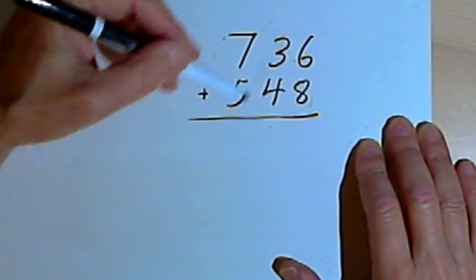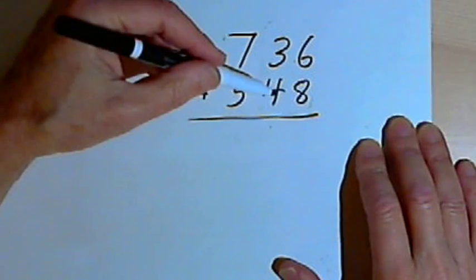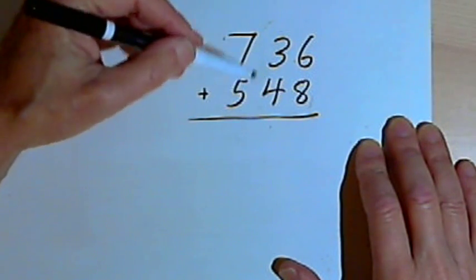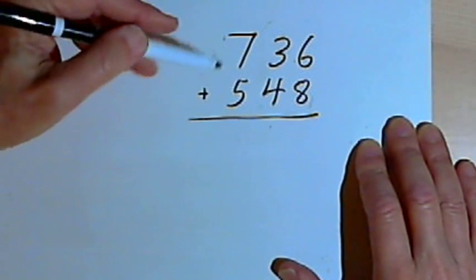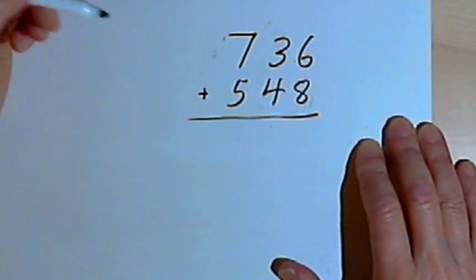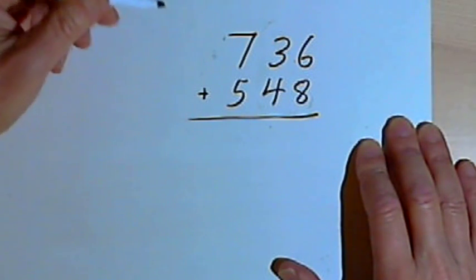Here I've got an addition problem: 736 plus 548. I've written those two numbers one over the other, with a plus sign. I'm going to add them first in the way you probably learned to do this.